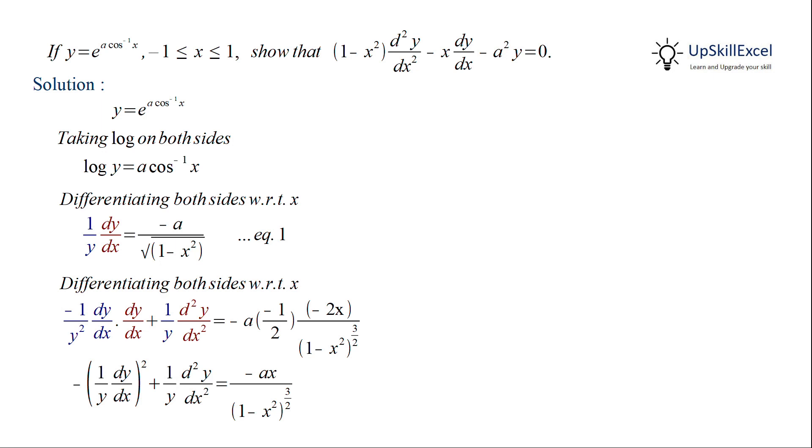So we will replace 1 upon y dy by dx using equation 1. And the right hand side looks similar to the right hand side of equation 1, with the exception that we have an extra x in the numerator and extra 1 minus x square in the denominator.